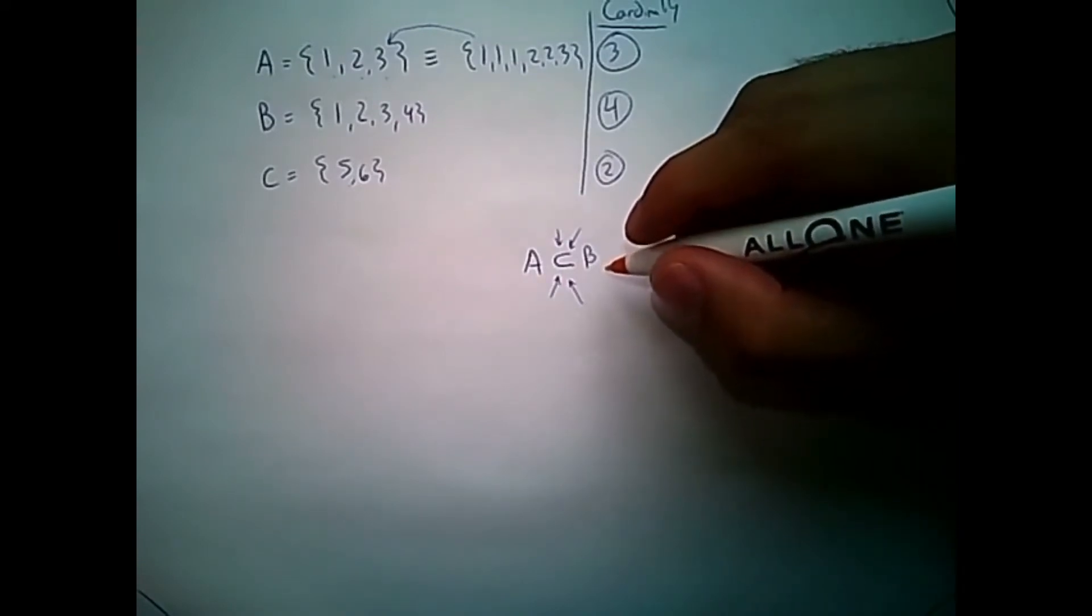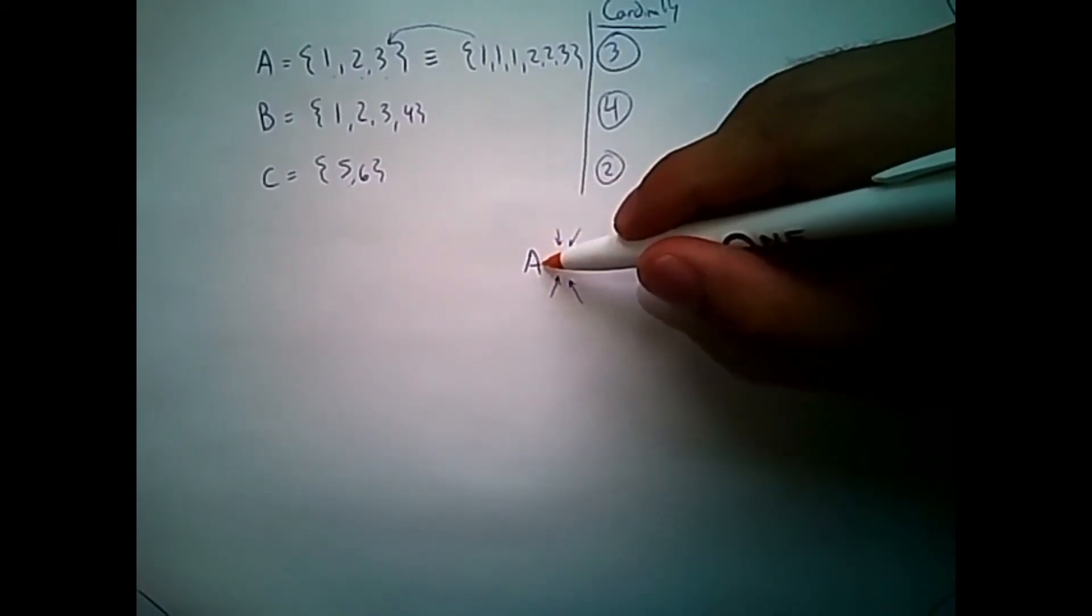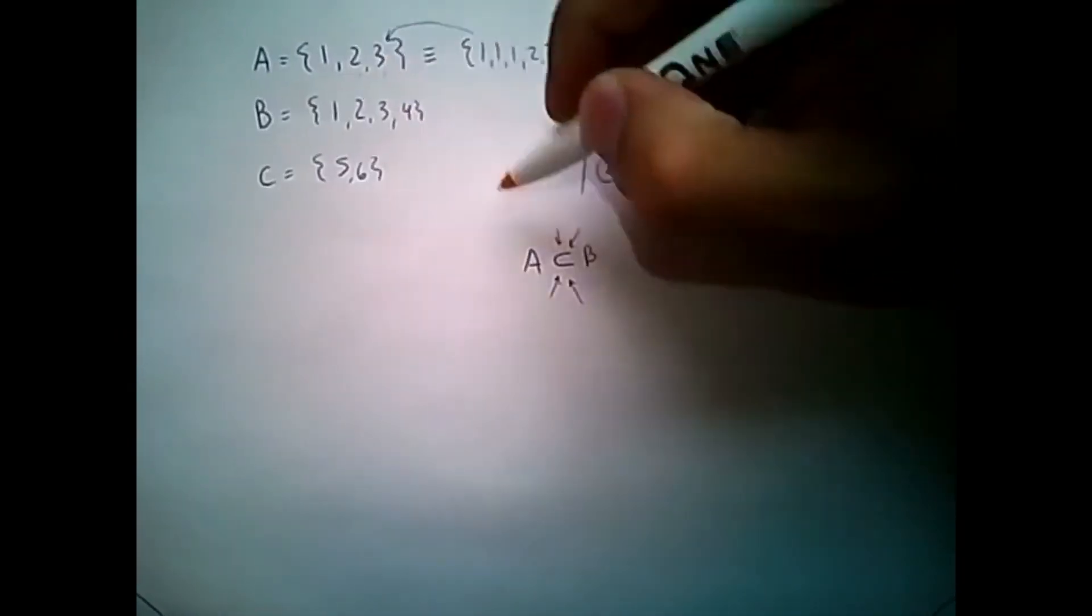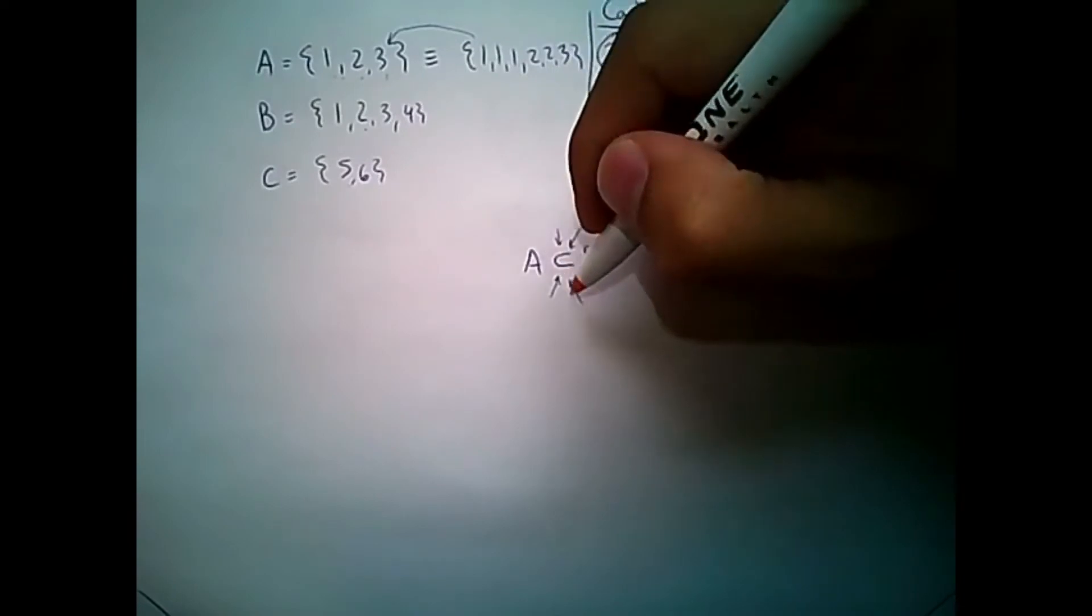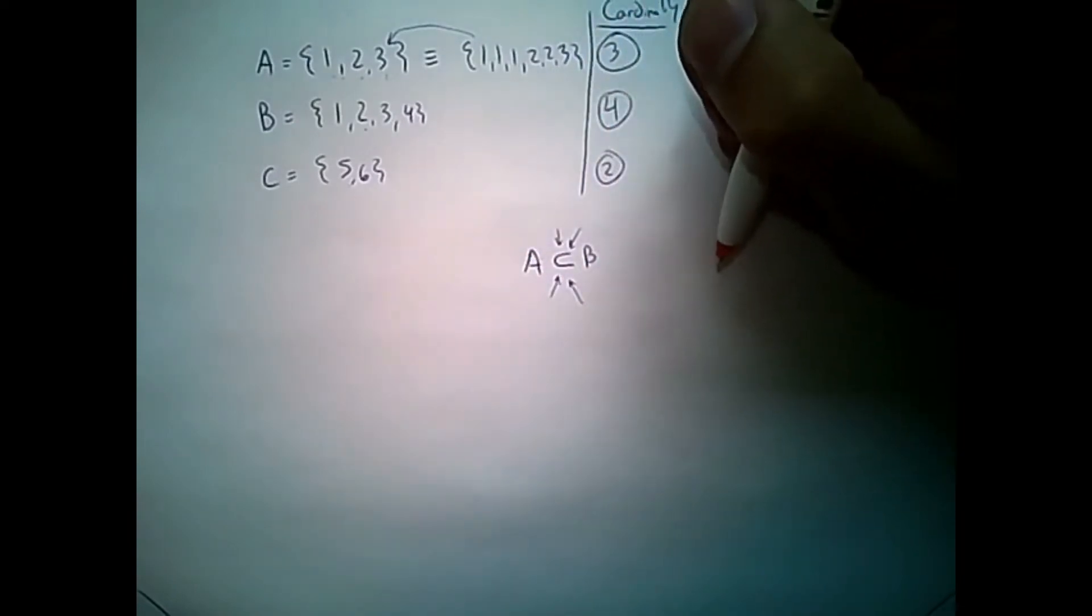Which means all the elements of A, the set here, 1, 2, and 3, are in B. And I see them 1, 2, and 3. But these sets aren't equal. If they are equal,